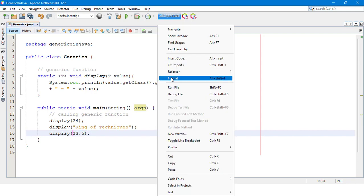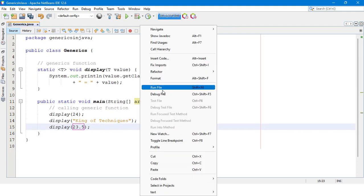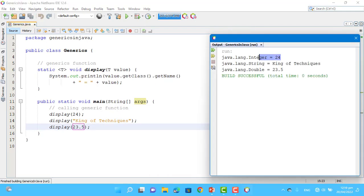When I run this program, the first type of data is integer 24, the second type of data is string, and the third type of data is 23.5.